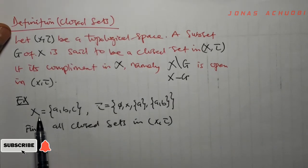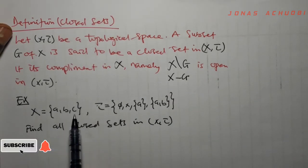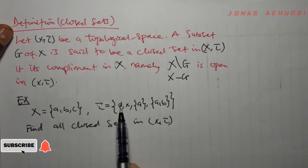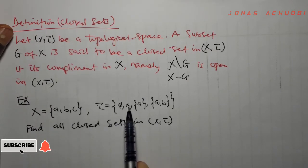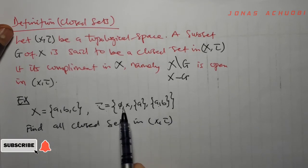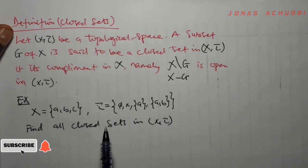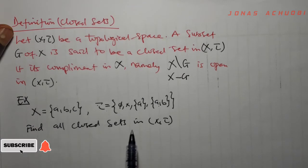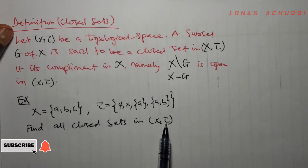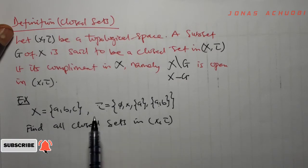Let us give an example to illustrate what a closed set looks like. We have a set X with elements A, B, C, and a topology tau defined on X with open sets phi, X, A, and {A, B}. There are four open sets. The question says we should find all closed sets in the topological space (X, tau). It can easily be verified that this pair (X, tau) is a topological space.